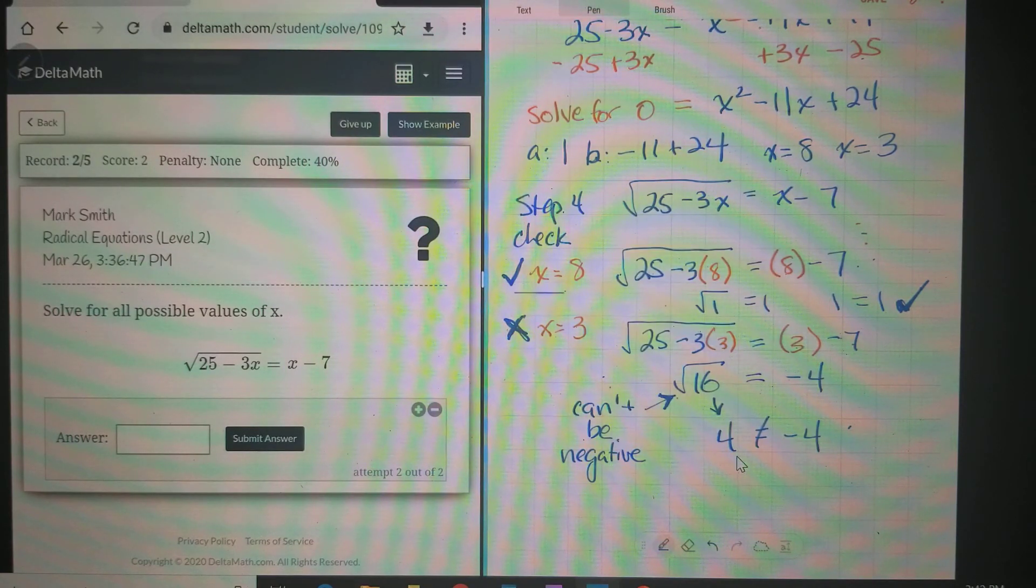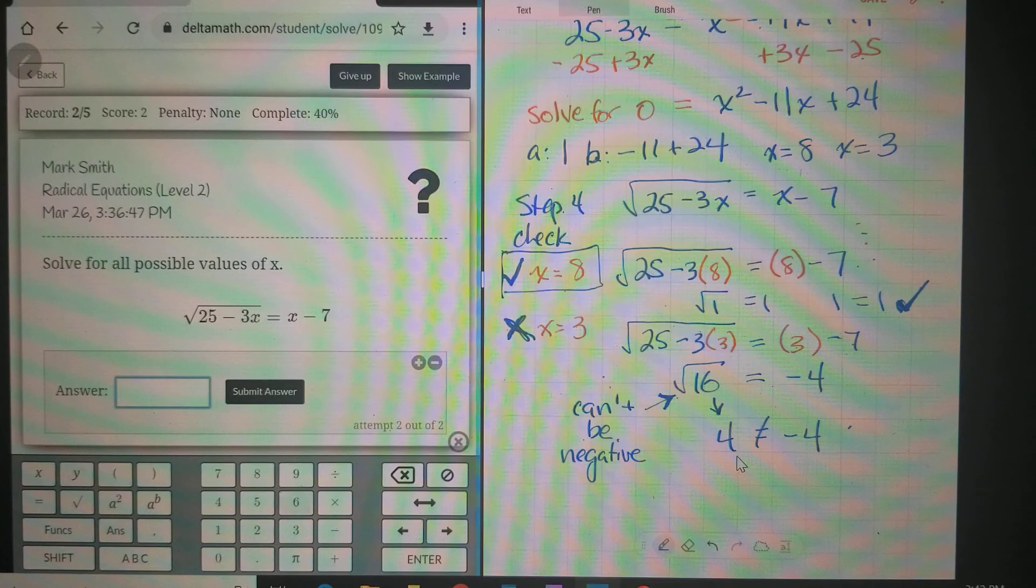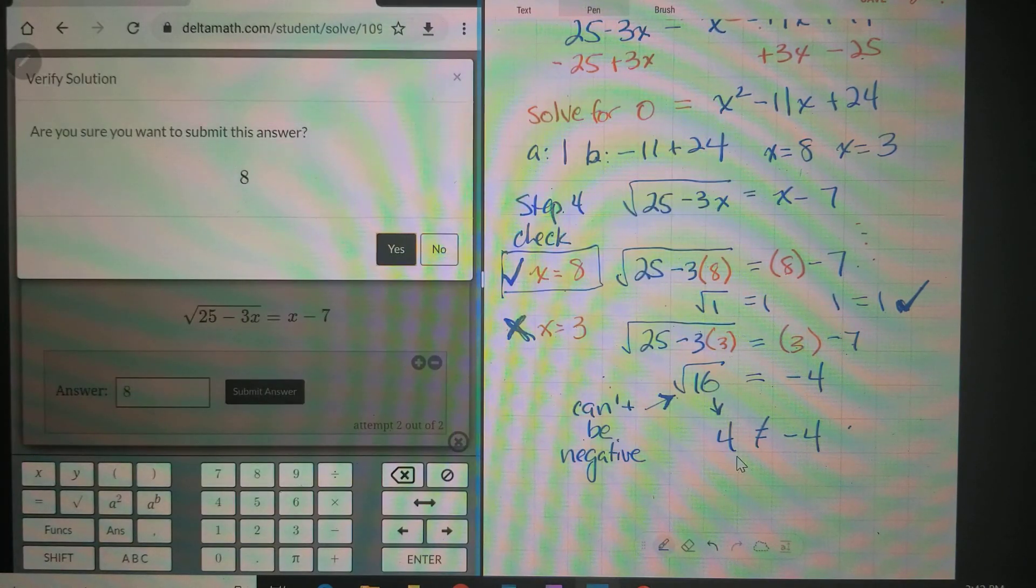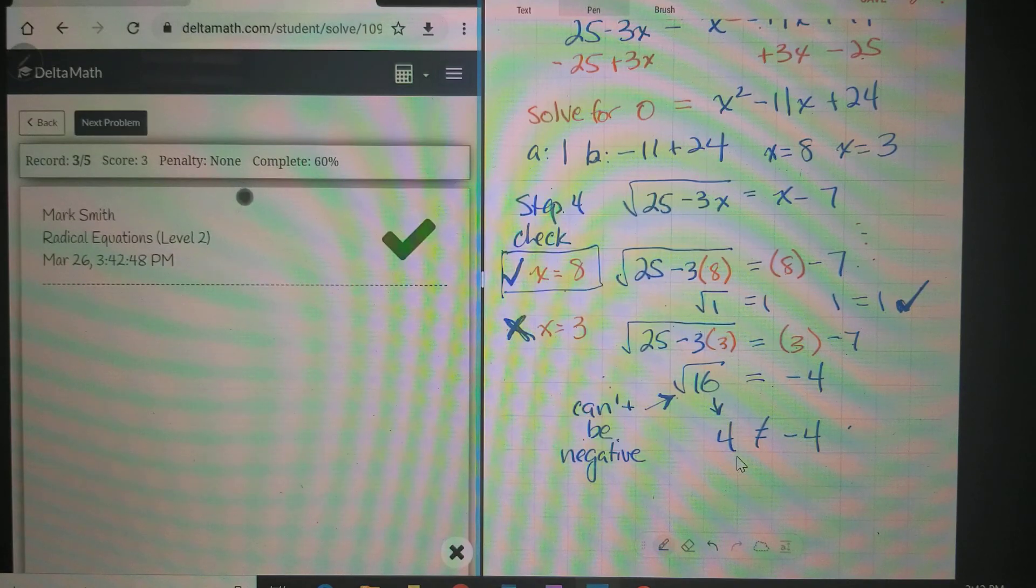So back up here, our answer 8 works but our answer 3 does not work. So when we come back over here and we say we only have one answer and that answer is 8, then we submit 8 and we get a check mark.